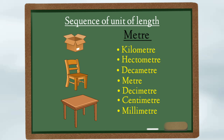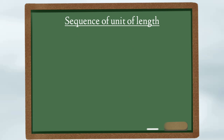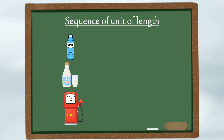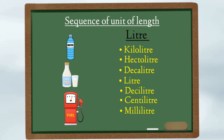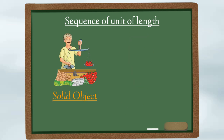Or if you want to measure the volume of a liquid such as water, milk, or petrol, we will use liter in place of meter. So the units become: kiloliter, hectoliter, decaliter, liter, deciliter, centiliter, and milliliter.